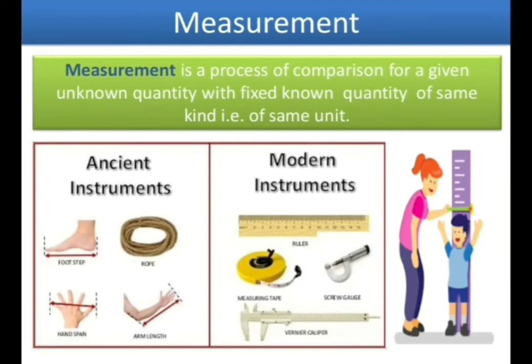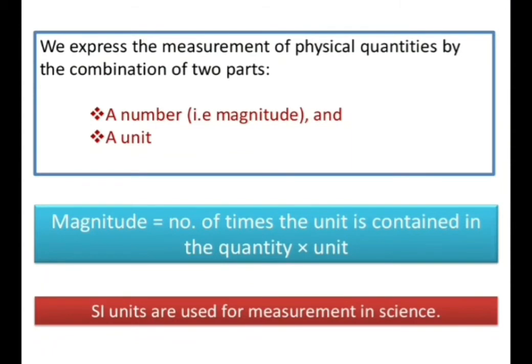Here a figure is shown illustrating instruments used in ancient times versus modern times. In ancient times, the instruments used were not precise — they did not give us the exact value. Modern instruments, however, give us accurate and precise results. We express a physical quantity by a combination of a magnitude and a unit. For example, if the length of a student is 104 cm, here 104 is the magnitude and centimeter is the unit. Alone, 104 doesn't mean anything, and alone centimeter doesn't mean anything — we need both magnitude and unit to define a measurement.